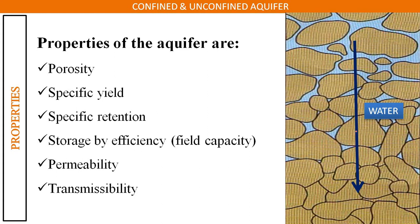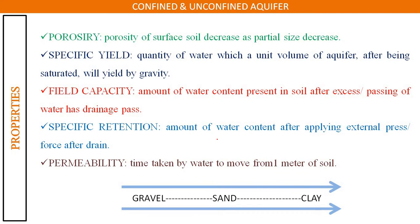Here are some of the properties of aquifer: porosity, specific yield, specific retention, storage efficiency or field capacity, permeability, and transmissibility. The figure shows that gravel has more permeability compared to sand, and sand has more permeability compared to clay — so more permeability at the top and less at the bottom.